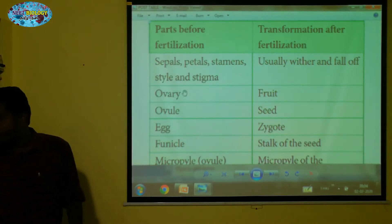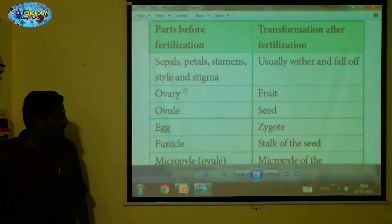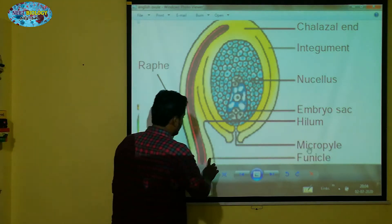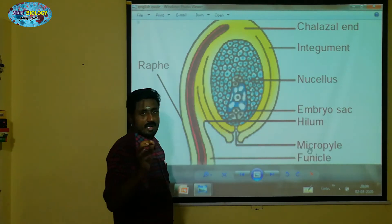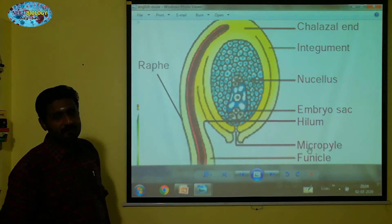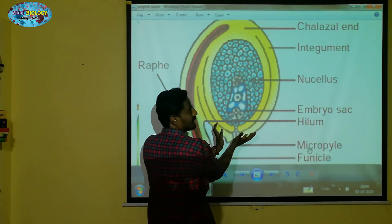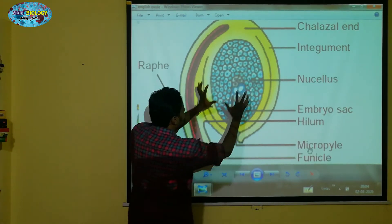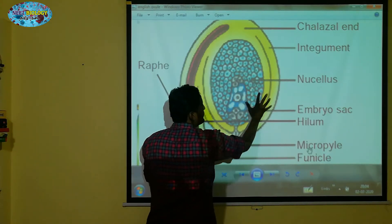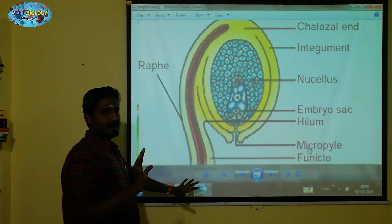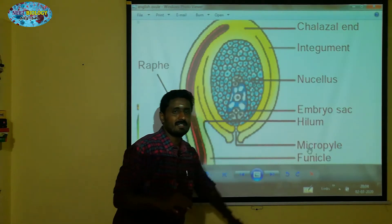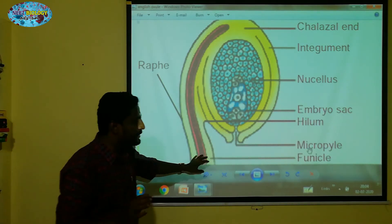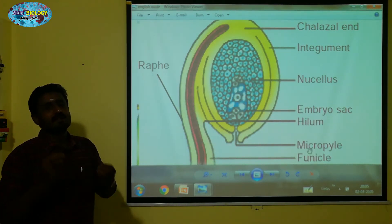Next, there is the funicle — the stalk of the seed. If you observe the ovary diagram, this is the stalk of the ovule, which is the funicle. After the formation of the seed in this area, the funicle is literally called the stalk of the seed. When the ovule becomes a seed, this funicle remains as the stock of the seed.